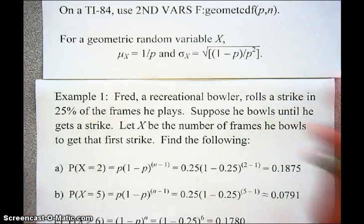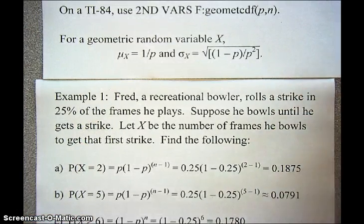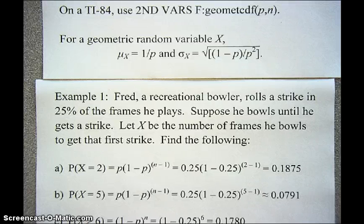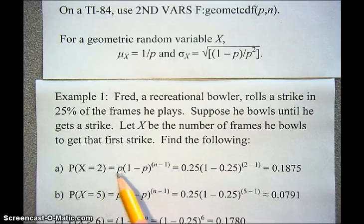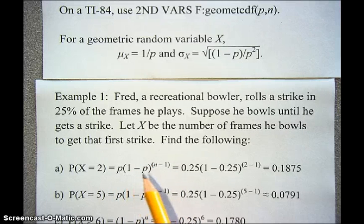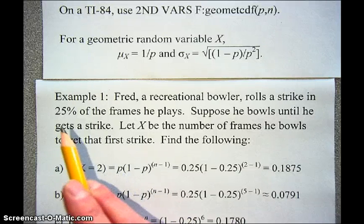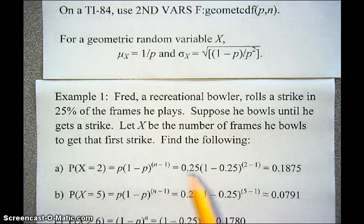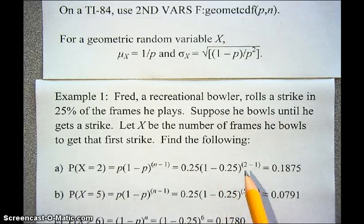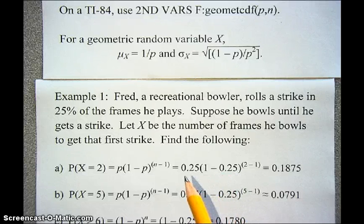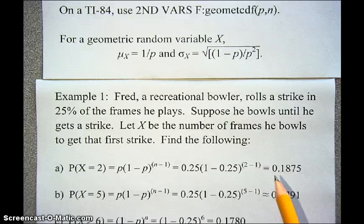Here's an example. Fred is a recreational bowler who rolls a strike in 25% of the frames he plays. Suppose he bowls until he gets a strike — let X be the number of frames he bowls to get that first strike. For the probability that X equals 2, we use the geometric formula: 0.25 times (1 minus 0.25) to the 2 minus 1 power. That's 0.25 times 0.75, which equals 0.1875.